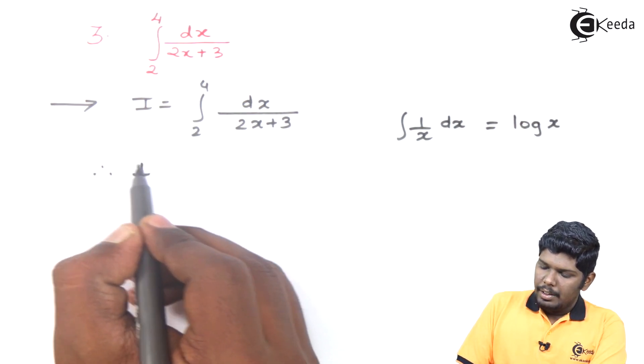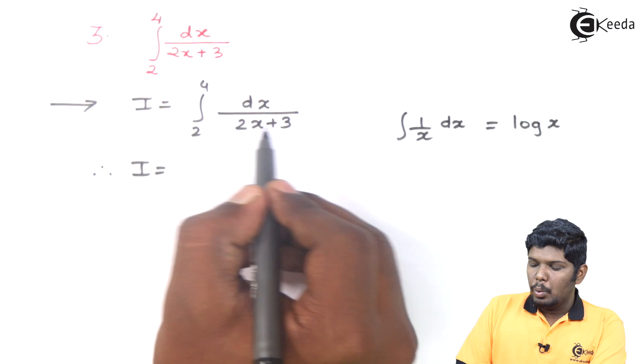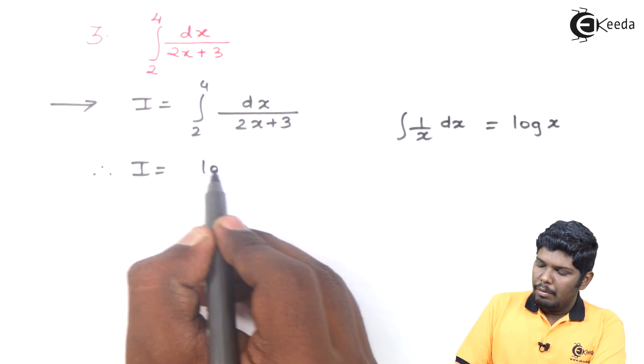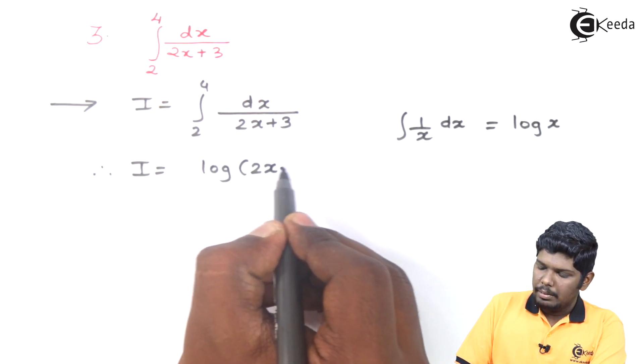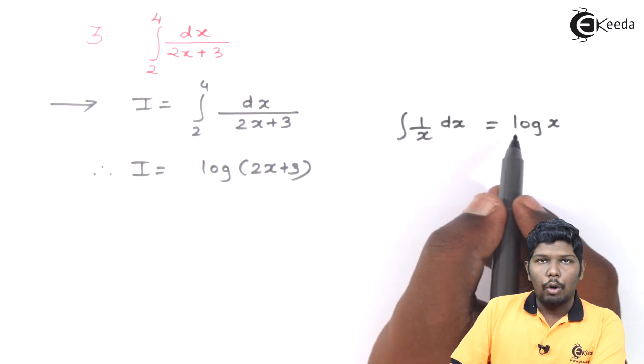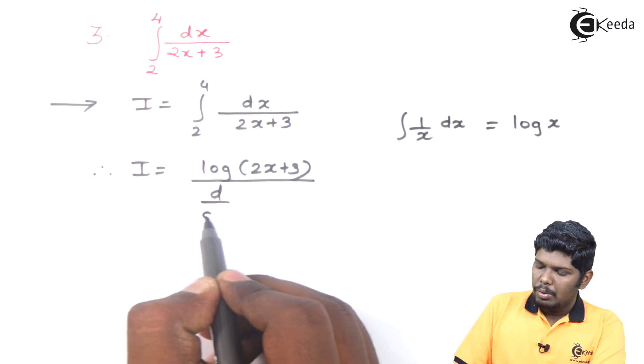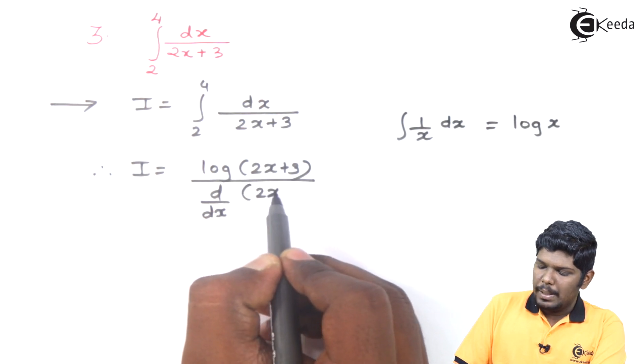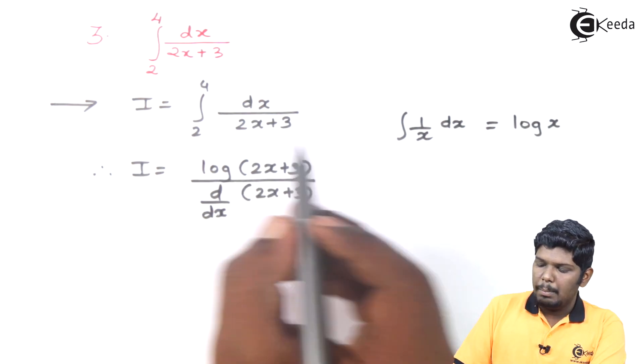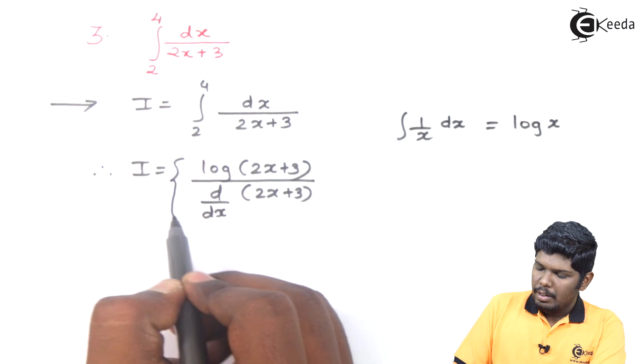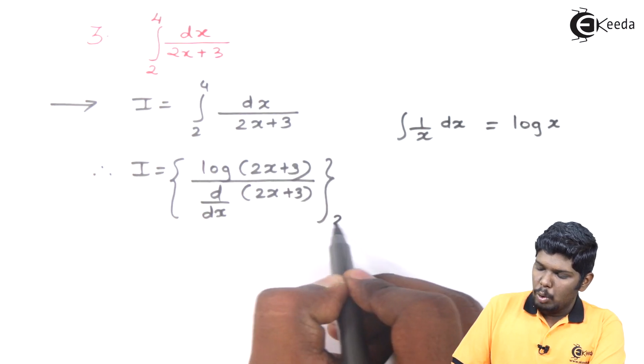Here, integration of 1 upon 2x plus 3 will give you log of 2x plus 3 using this formula. And I will divide by the derivative of 2x plus 3 as x is replaced by 2x plus 3. Within integral, we have 2 to 4.